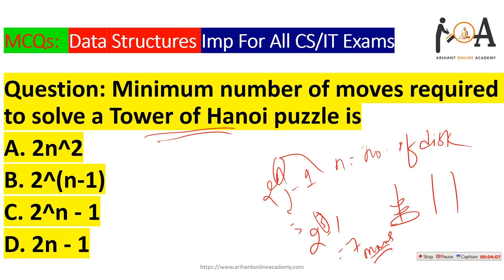If you don't know about the Tower of Hanoi scenario, we have made a lecture on it in our algorithm playlist. You can search for that lecture or use the play card to find it. So 2^n − 1 is the correct answer here.